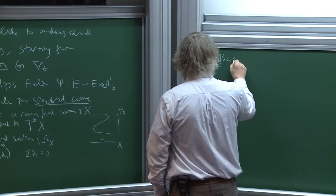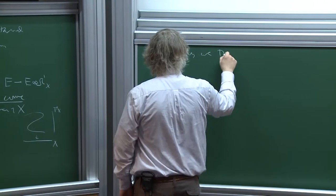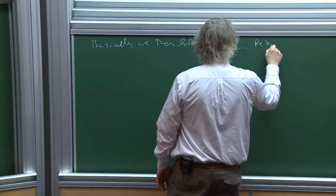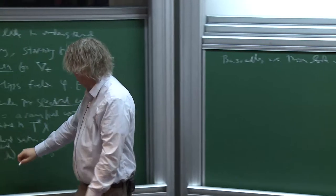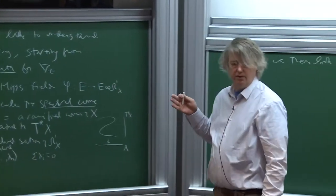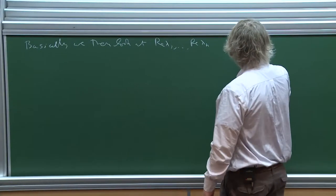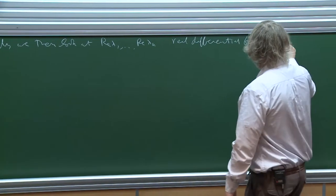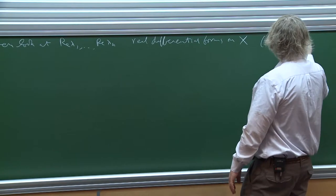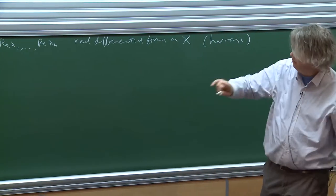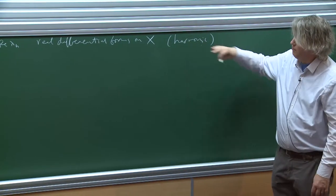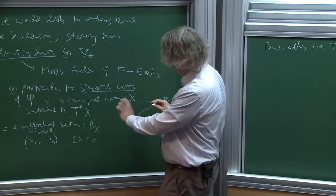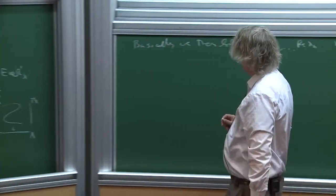These are holomorphic differentials on our complex Riemann surface, but we just take the real part. So we get real differentials. The fact that they correspond to real parts of holomorphic differential forms just means that they're harmonic, and of course I'm saying this away from the ramification points. At the ramification points, a λ_i can switch with a λ_j. We'll see the picture of that in a minute.